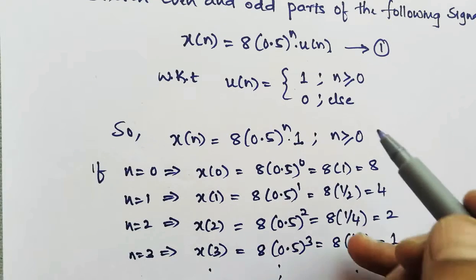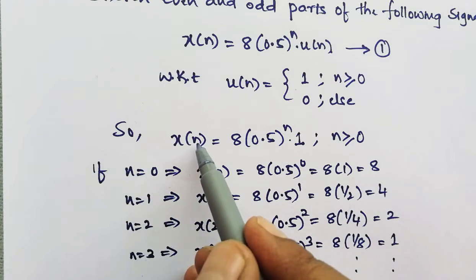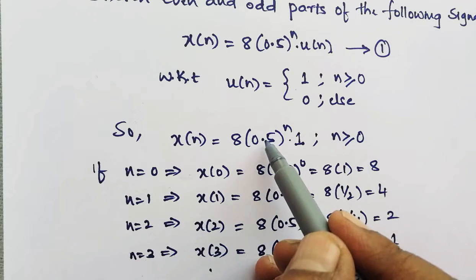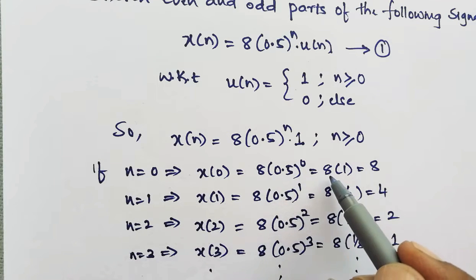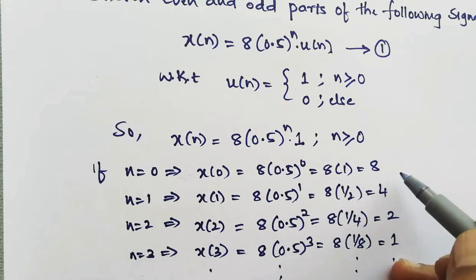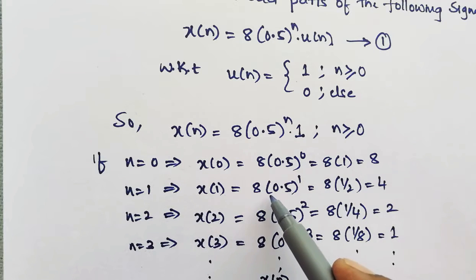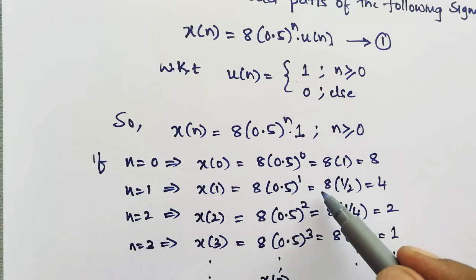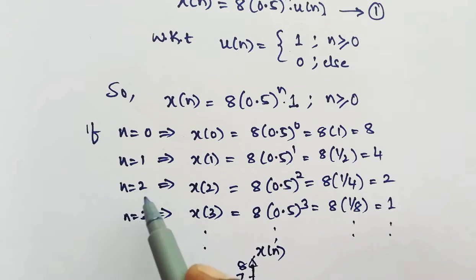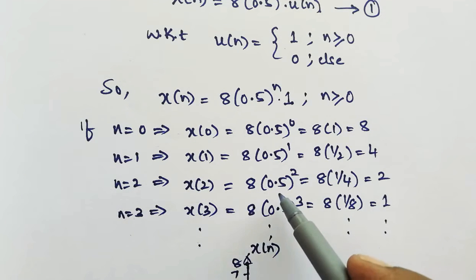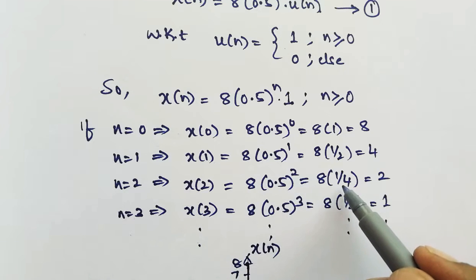Let us substitute values of n starting from 0. For n equal to 0: x of 0 equals 8 multiplied by 0.5 to the power 0, which is 8 into 1, giving us 8. For n equal to 1: x of 1 equals 8 multiplied by 0.5 to the power 1, that is 8 into 0.5, which is 4.